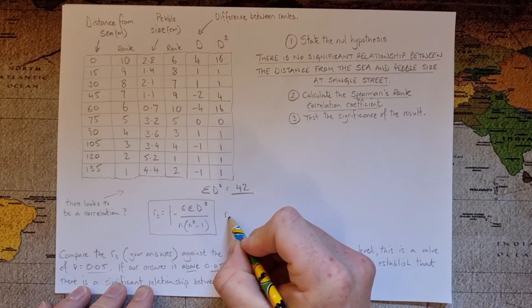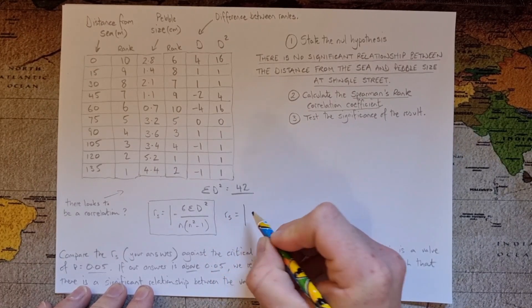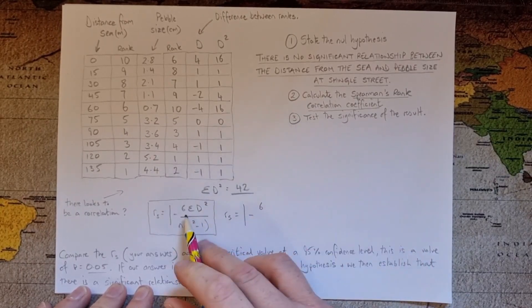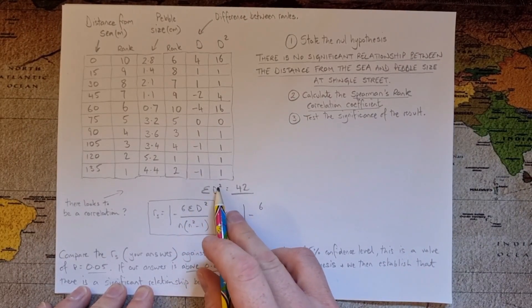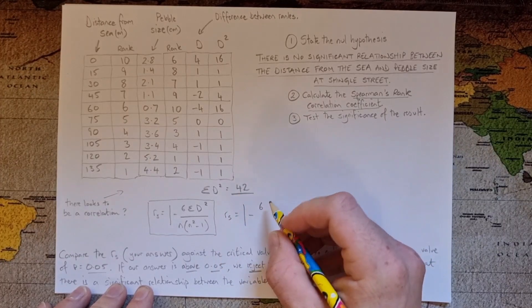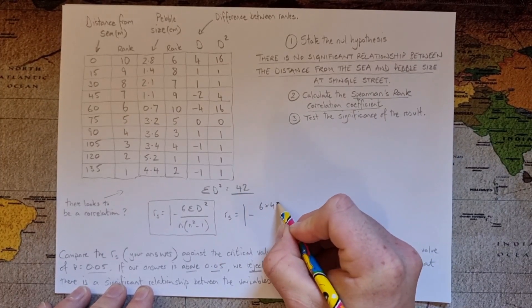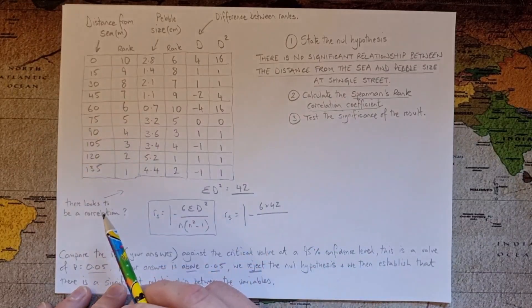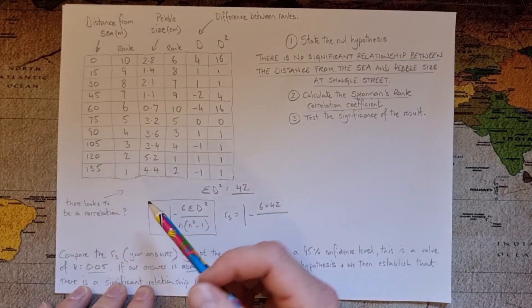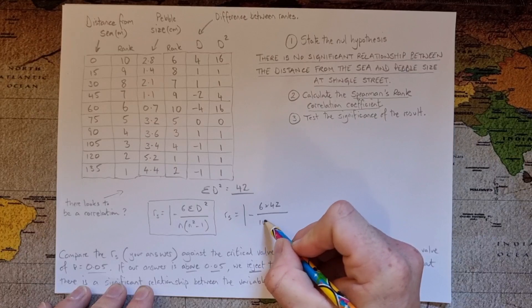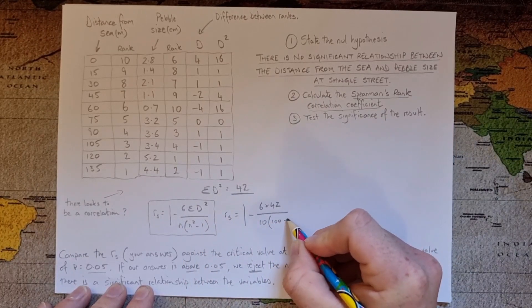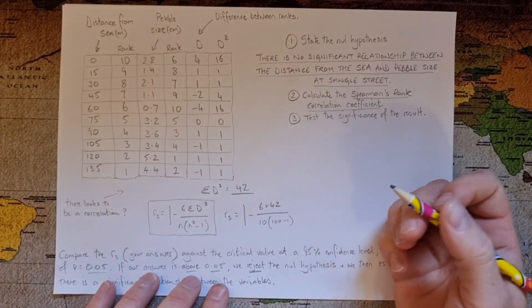So we're going to go Rs which means Spearman's rank is going to be 1 minus, and then we've got 6, and then this is the sum of d squared which we know is 42. So 6 lots of 42 there, over n is the number of pairs of data that we've got. So n is going to be 10, 10 squared minus 1, there we go.